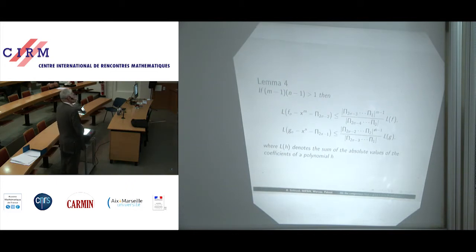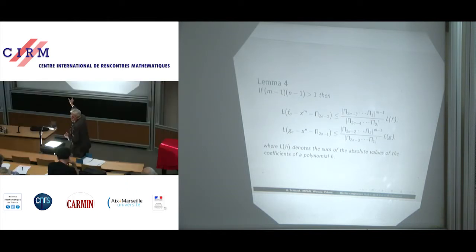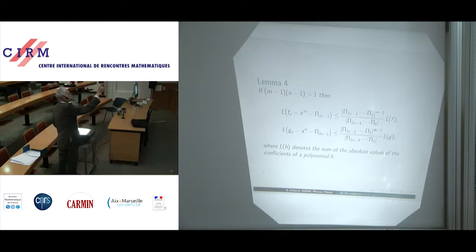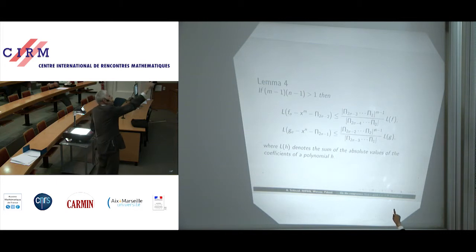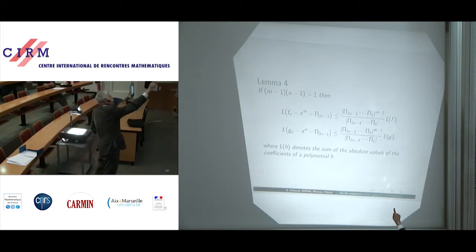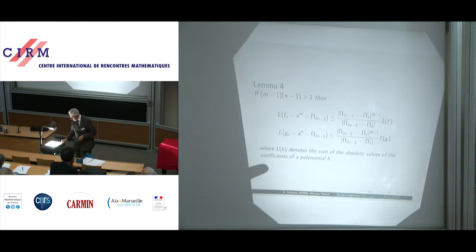Lemma 4: if (m−1)(n−1) is greater than 1, then the length of the polynomial — which you see on screen, consisting of f_sigma minus its leading term minus its constant term, so only the middle terms — is less than or equal to the length of f multiplied by a fraction shown on the screen. A similar result holds for g_sigma, only the exponent should be n−1 rather than m−1, a correction I only noticed after the transparencies were prepared.